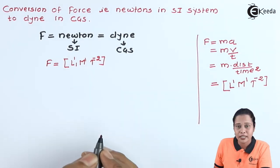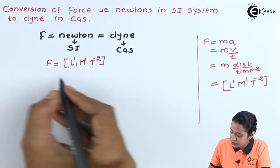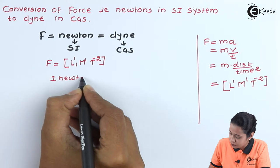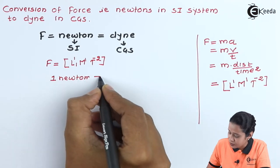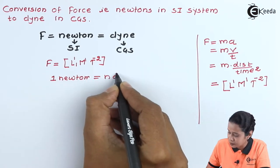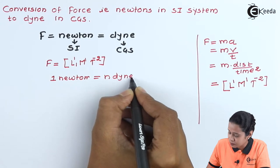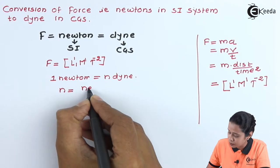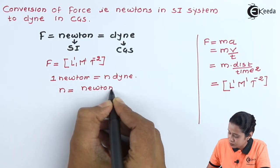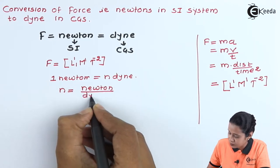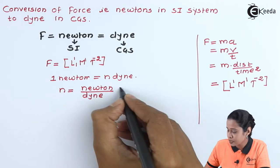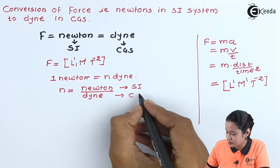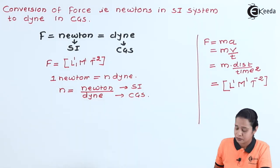Now, let us convert newtons into dynes. Just say 1 newton is equal to n dynes. So here we will write down N is equal to newton upon dynes. This is our system 1 that is SI and the dynes will be in the CGS.